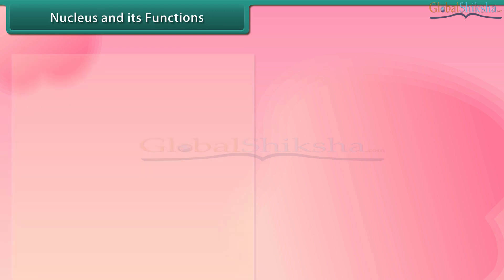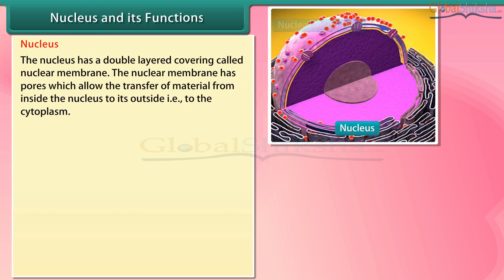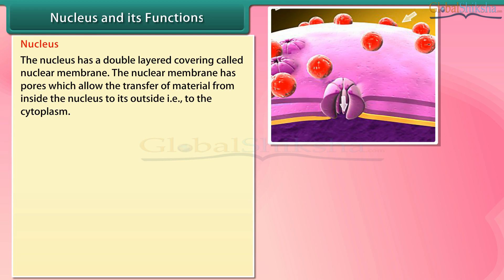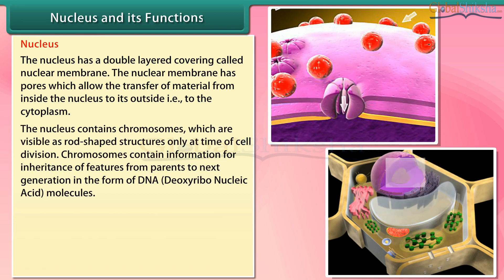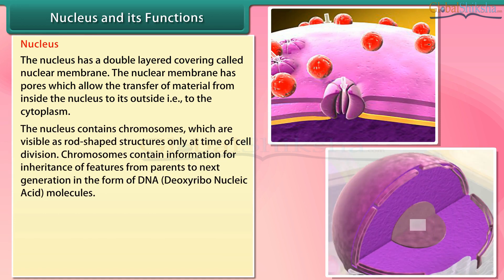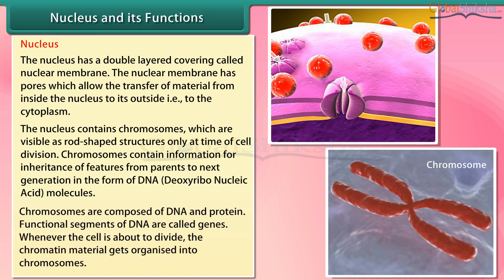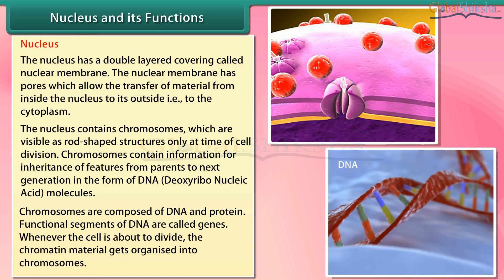Nucleus: The nucleus has a double-layered covering called the nuclear membrane. The nuclear membrane has pores which allow the transfer of material from inside the nucleus to the cytoplasm. The nucleus contains chromosomes, which are visible as rod-shaped structures only at the time of cell division. Chromosomes contain information for inheritance of features from parents to the next generation in the form of DNA — deoxyribonucleic acid molecules. Chromosomes are composed of DNA and protein; functional segments of DNA are called genes.